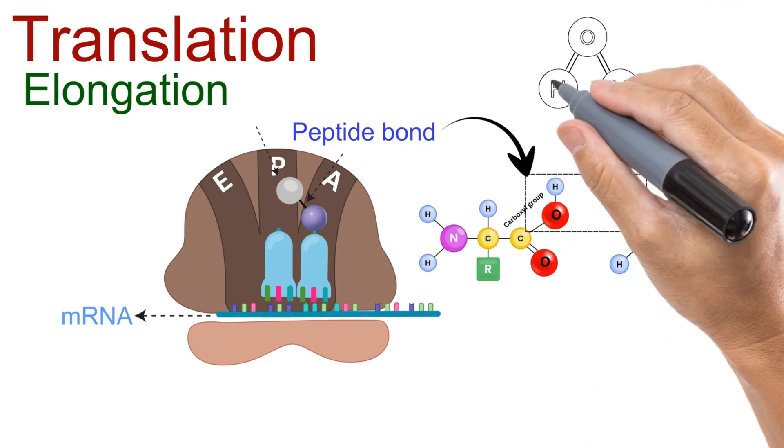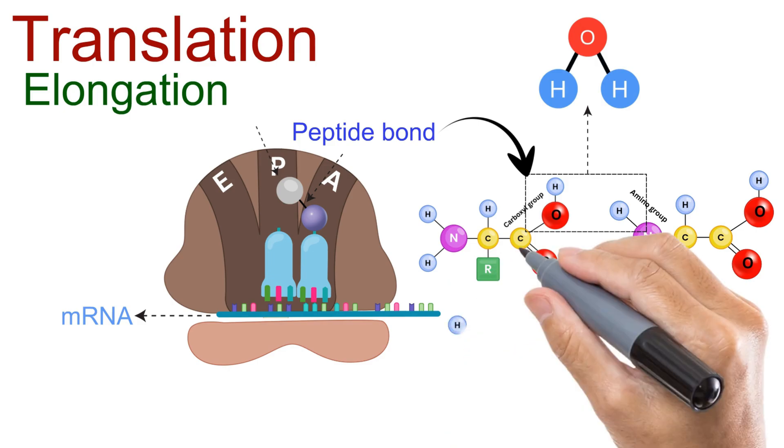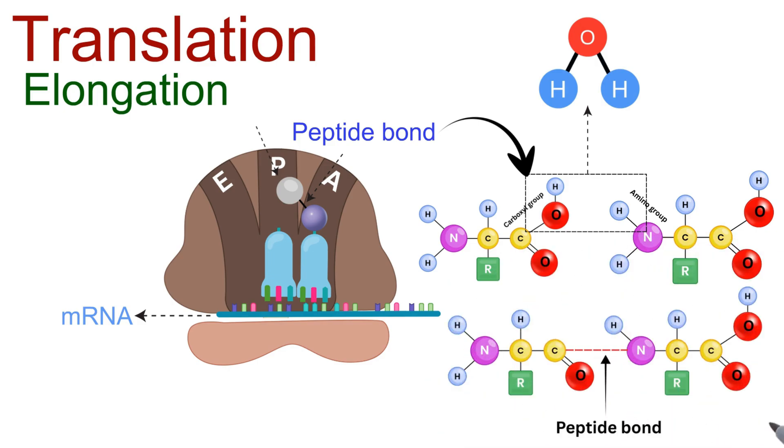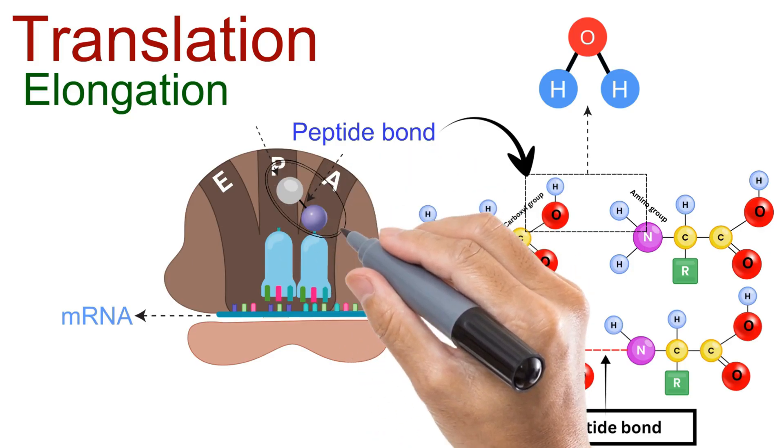Together, they form a molecule of water. What's left behind is a new bond between the carbon of the carboxyl group and the nitrogen of the amino group. This bond is called a peptide bond. In short, peptide bond formation is a dehydration reaction that links amino acids into a growing polypeptide chain.